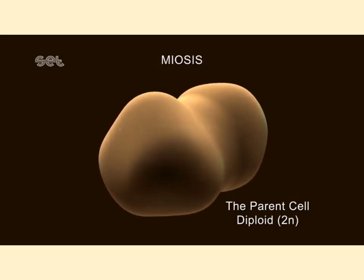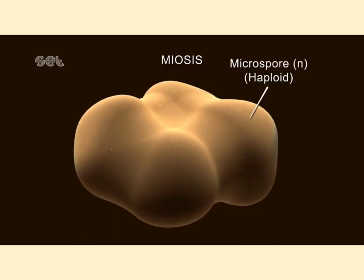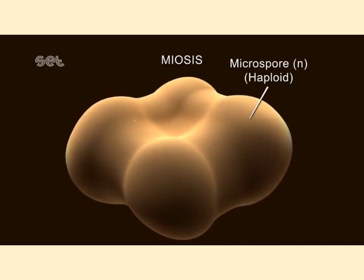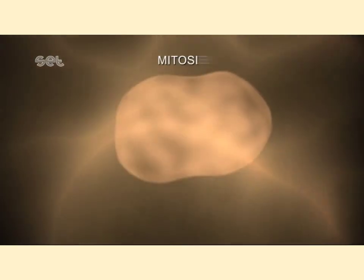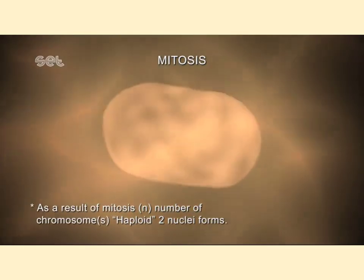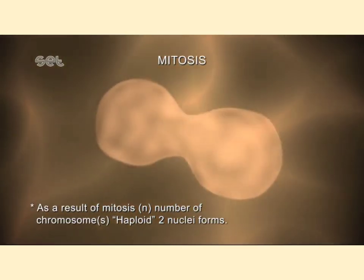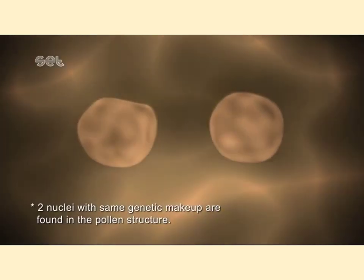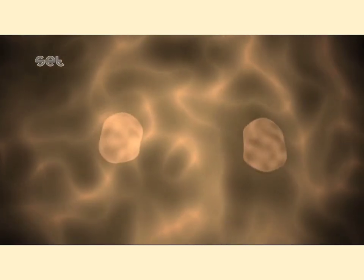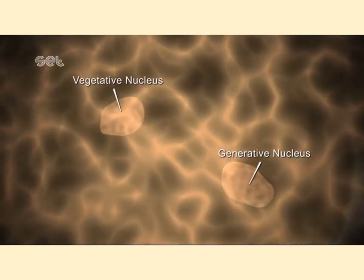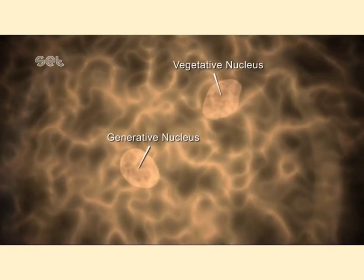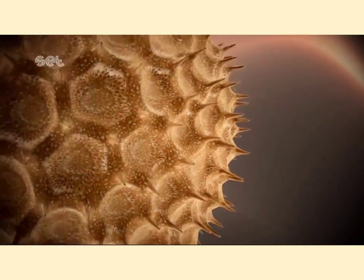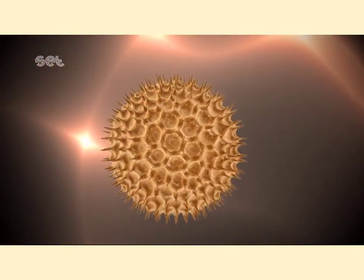The microspore mother cell undergoes meiosis and gradually forms four microspores. The four microspores gradually grow and are haploid in nature. Each microspore is a potential pollen which undergoes mitosis and two haploid nuclei are formed. Keep in mind that a microspore undergoes division of nucleus only — no cell division or cell wall formation takes place. These two nuclei generated are known as the generative nucleus and the vegetative nucleus, after which slowly and gradually they will form cell walls and two cells are formed — one is the vegetative cell and another is the generative cell.